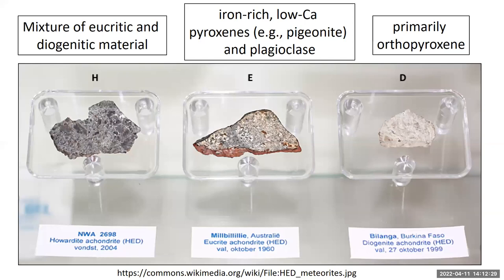These are pictures of a Howardite, Eucrite, and Diogenite. The Eucrite is composed primarily of iron-rich, low-calcium pyroxene — kind of like pigeonite — and also plagioclase feldspar, about half and half. The Diogenites are primarily orthopyroxene. The Howardites have mixtures of Eucritic material and Diogenitic material, showing that Eucrites, Diogenites, and Howardites all come from the same parent body. There are a few thousand of these HEDs on Earth, and that's how we can link these meteorites all to the same body — they're usually abbreviated as HEDs.